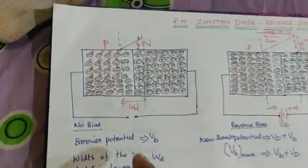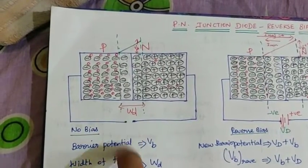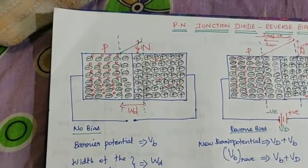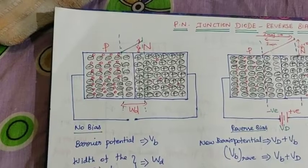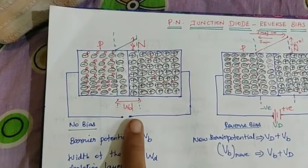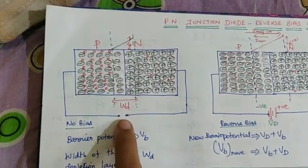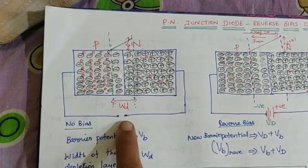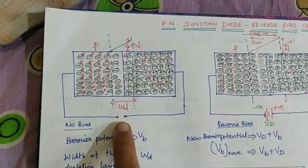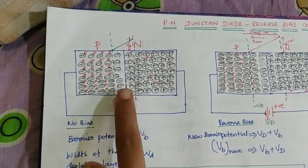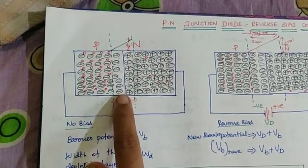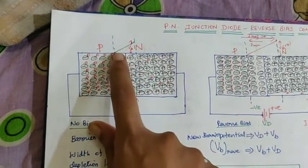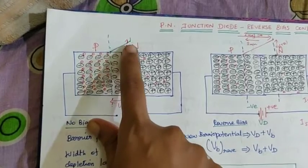Here we will see the first diagram. This is the no bias condition. Biasing is applied — we will do biasing using a voltage source. In the no bias condition, we will see the depletion region. This is the width of the depletion region. This is the built-in voltage, also called the barrier voltage.